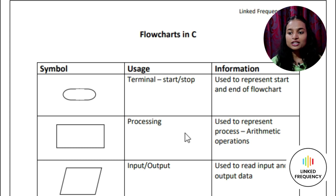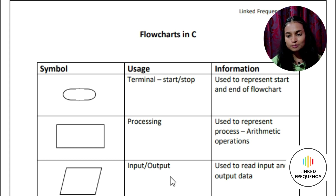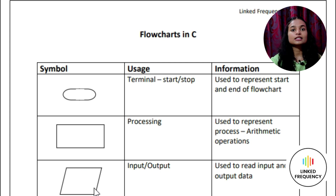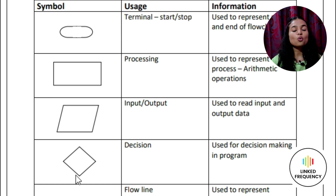The next symbol is processing. The rectangular box represents arithmetic operations or instructions to be performed, such as addition, subtraction, multiplication, and so on. Then the next one is input and output — the parallelogram represents the input and output type. Moving on to the next symbol: decision. The diamond shape represents a true or false statement to be tested in the decision making process.